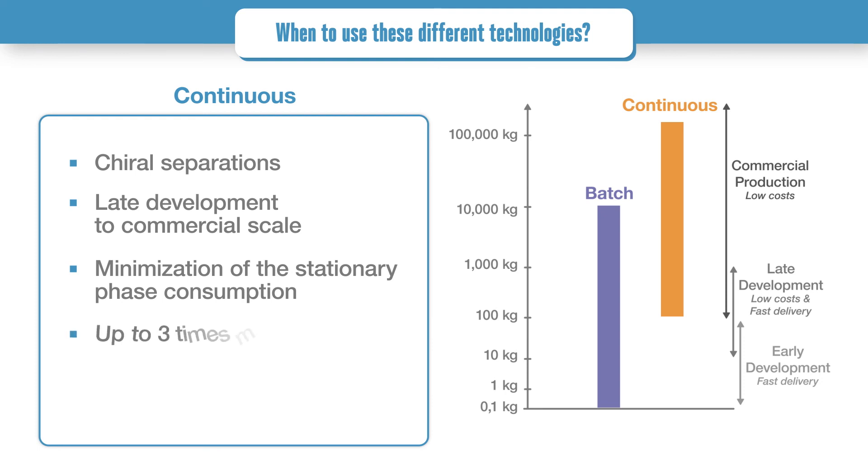A continuous process is up to three times more productive than batch chromatography, and has the lowest operating costs.